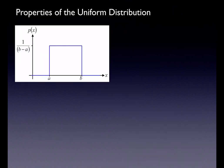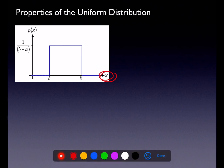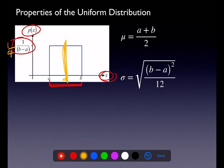Let's take a look at the uniform distribution. When constructing the graph, put your variable on the x-axis and probability along the y-axis — analogous to labeling the top row of your table as X and the bottom row as probability. Whatever this distance is — the base, or b minus a — the height is the reciprocal of that. So if the base was 4, the height would be one-fourth. The mean is always (a + b) / 2 — it's halfway, the midpoint between a and b.